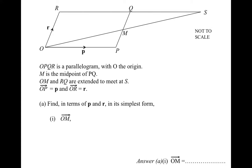This is an exam question on vectors. It says OPQR is a parallelogram with O the origin, M is the midpoint of PQ, OM and RQ are extended to meet at S, vector OP equals P and vector OR equals R. First we're going to look at the terminology.